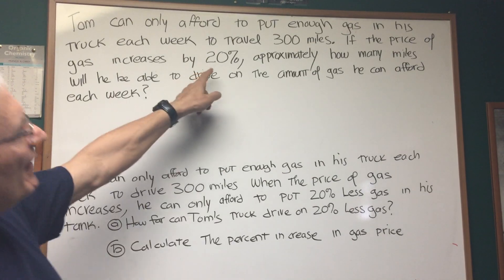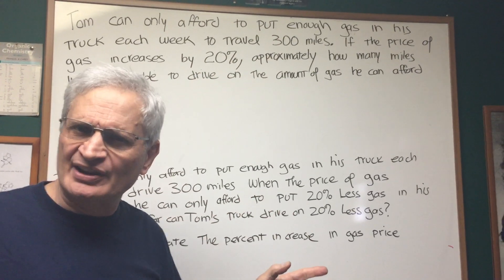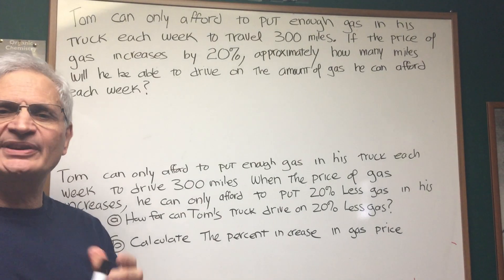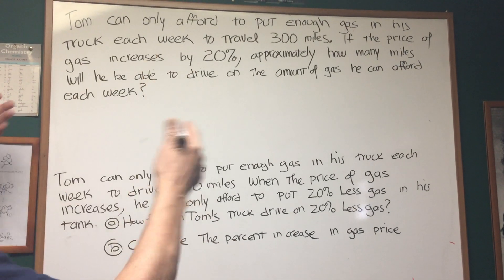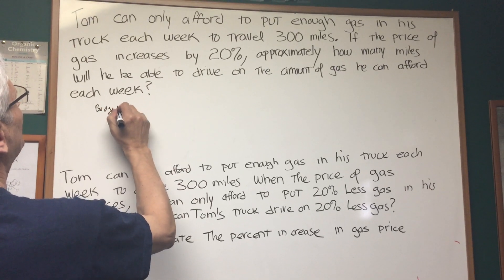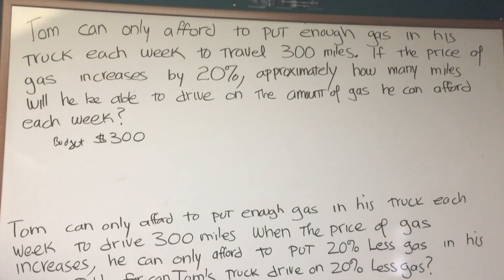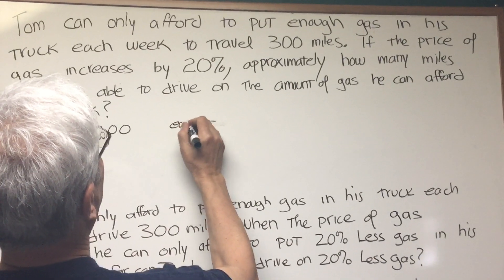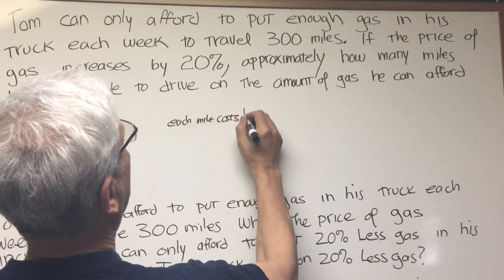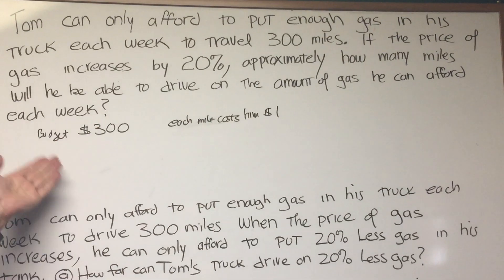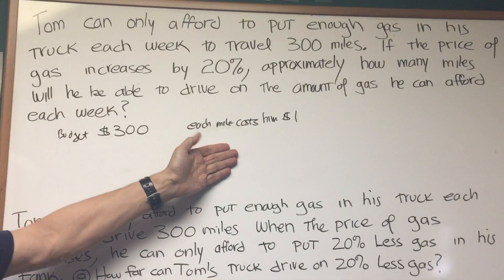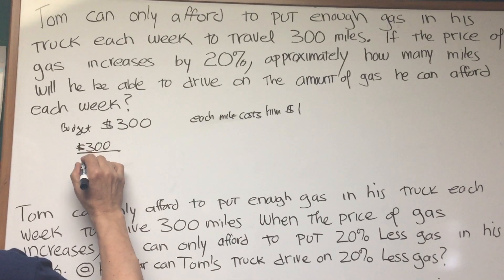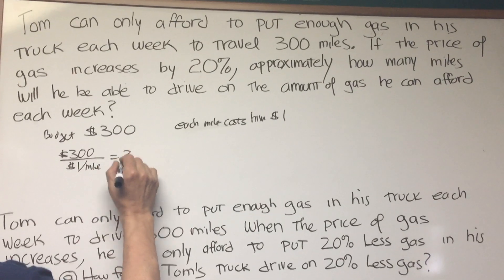At first blush, you may look at this and say he'll be able to travel 20% less miles — and that's not the case. Let's look a little closer at this problem to see why not. For this problem, I'm going to introduce a technique which may be very helpful in solving other problems. Let's just make up an amount. Let's say his weekly budget is $300, and let's say each mile costs him $1. So how many miles can he travel? If he can only afford $300 and each mile costs him $1 to travel, then the number of miles he can travel is $300 divided by $1 per mile, which equals 300 miles.